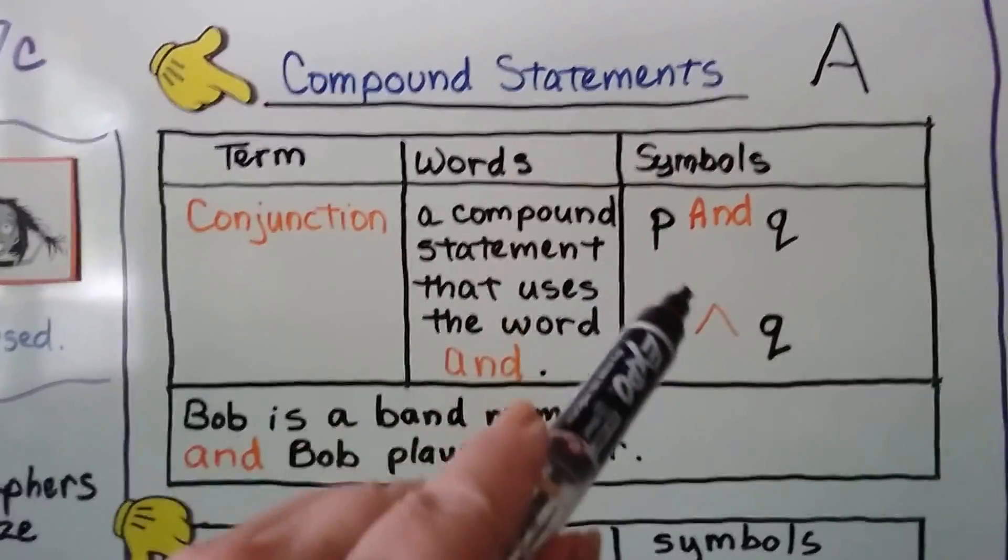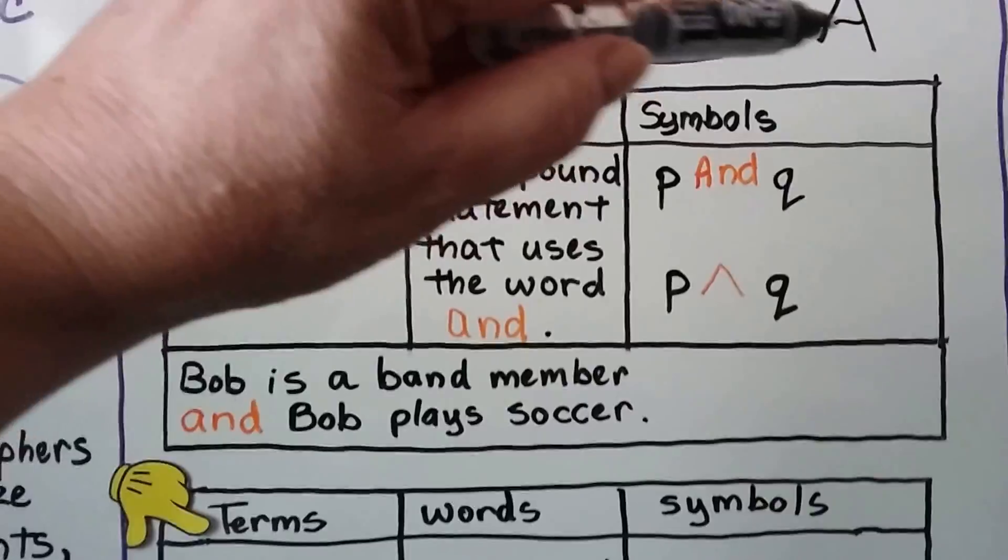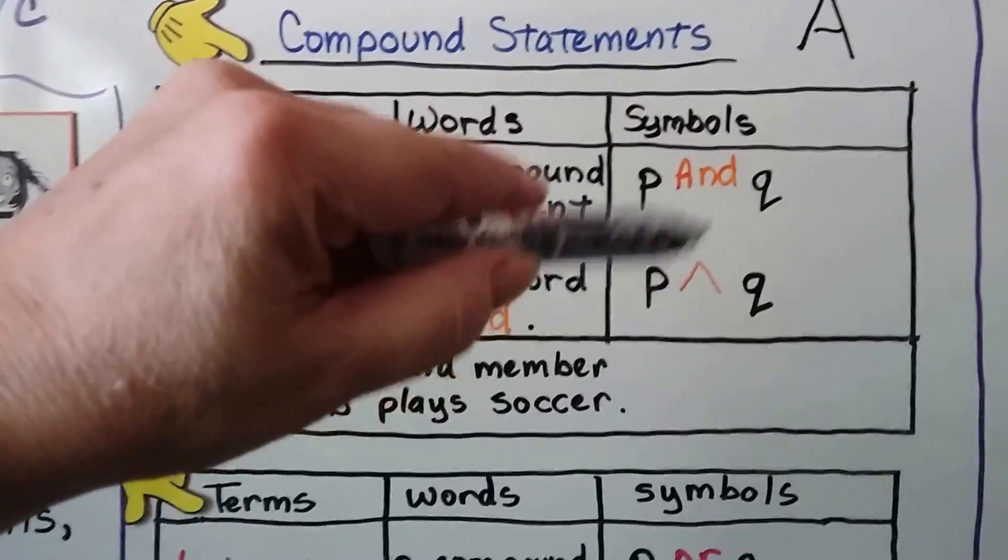And I can remember that this is and because it sort of looks like an A, except we just needed to cross the A. So it's sort of like an A for and.